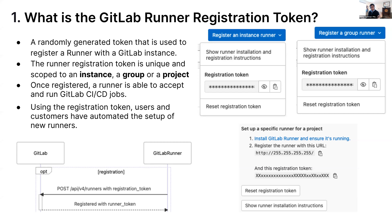The only two pieces of information that you need to register are the URL and the token. GitLab, on its end, will look up the token — each project, each group, each instance has a registration token associated with it — and associate or register the runner with the correct scope, returning an authentication token back. With these two pieces of information, anyone can register a token, which is both a positive thing because it's very easy, but also can bring negatives as we will see later.